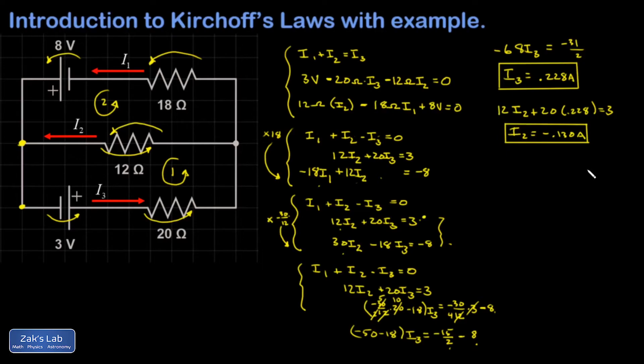Finally, I take i3 and i2 and I plug into equation number 1, where I have i1 plus i2. Well, that was negative 0.130 minus i3, 0.228 is equal to 0. And I get 0.358 amps.